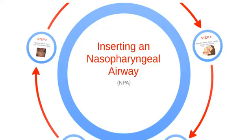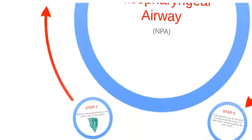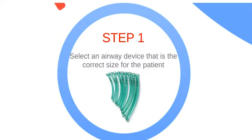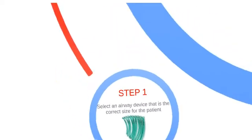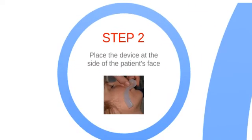Inserting an NPA is rather similar to inserting an OPA. First, select a size-appropriate device for the patient. Next, place the device at the side of the patient's face. Like the OPA, make sure to choose the device that extends from the corner of the mouth to the earlobe. Also, try to use the largest diameter that will fit in the nostril.